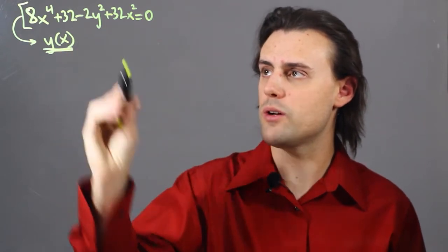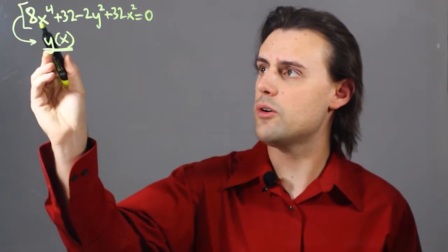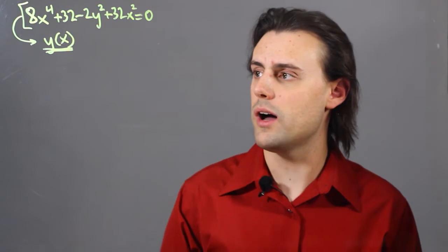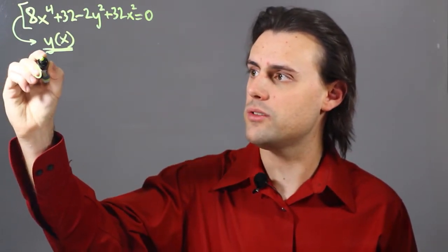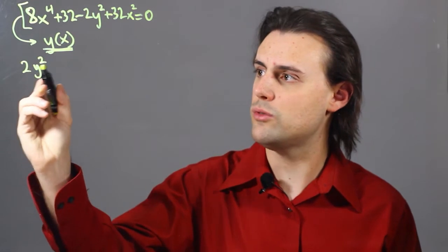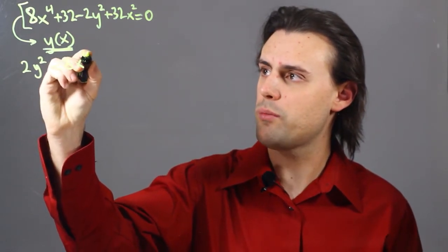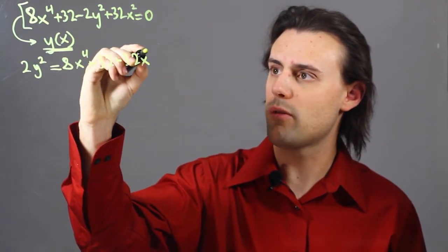This means I'm going to have to rearrange some of these terms. We notice that there's just one term in this polynomial that depends on y, so I'm going to move that over to the other side, and it becomes positive. So I have positive 2y squared is equal to 8x to the fourth power plus 32 plus 32 times x squared.